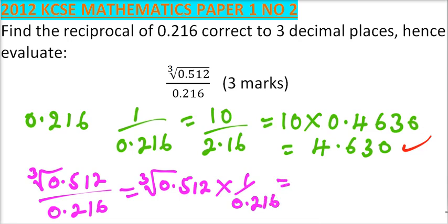you can get the cube root of 512, which is equals to, so using your calculator, and you multiply by this,